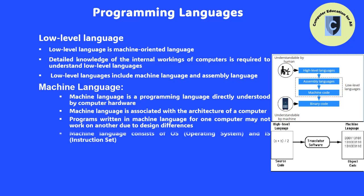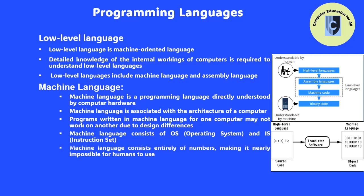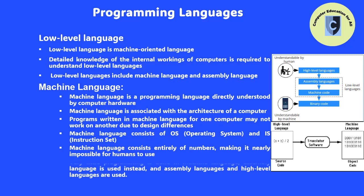Machine language consists of 0s and 1s. It is almost impossible for humans to use machine language because it entirely consists of numbers. Therefore, practically no programming is done in machine language. Instead, assembly languages and high-level languages are used.